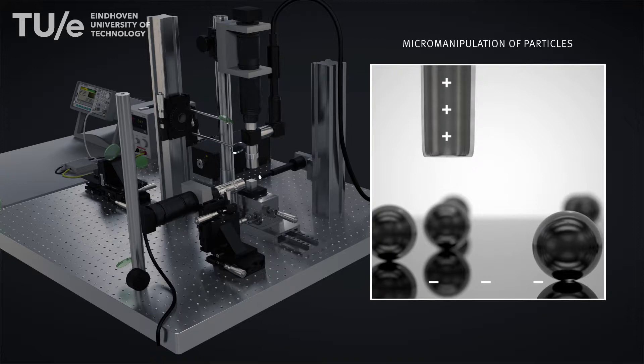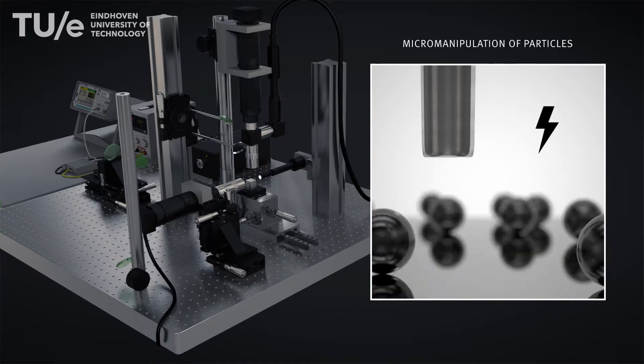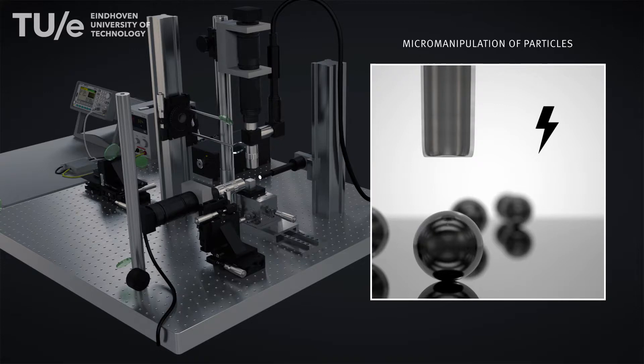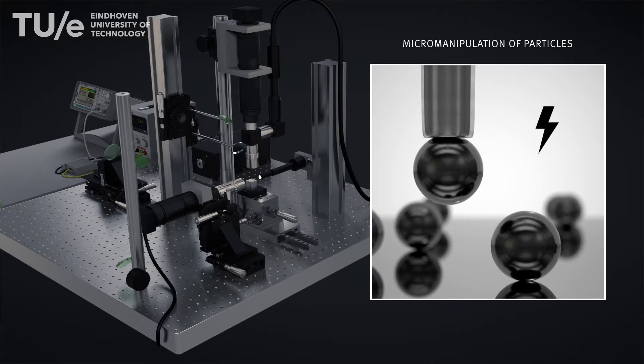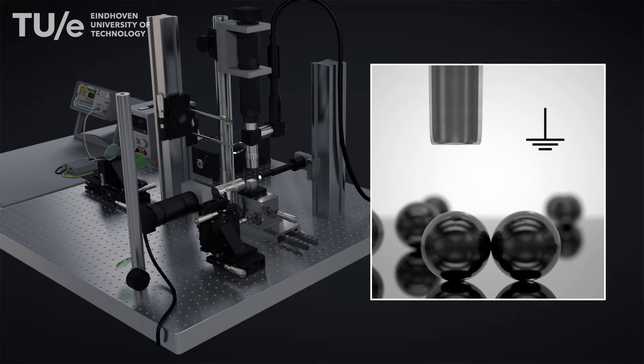A voltage is applied between the probe and the substrate. When a polymer particle is present within such an electric field, a dielectrophoresis force is exerted on it, which attracts the particle towards the probe. By switching off the voltage, the polymer can be placed adjacent to another particle.